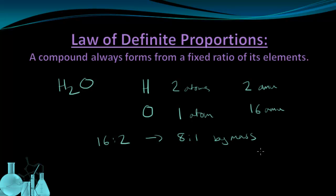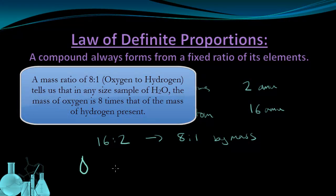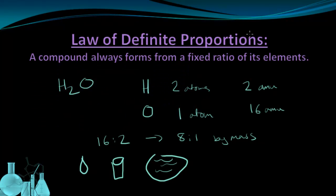What this mass ratio tells us is that any sample of water, whether it be a single droplet of water, or a cup of water, or an ocean, the mass of oxygen present in that water is going to be 8 times that of the mass of hydrogen in that water. And that is the Law of Definite Proportions.